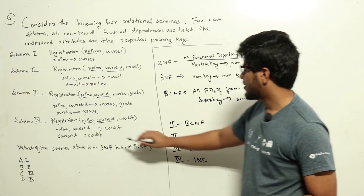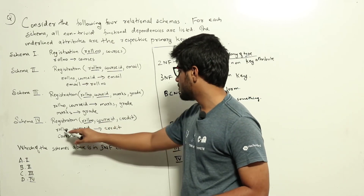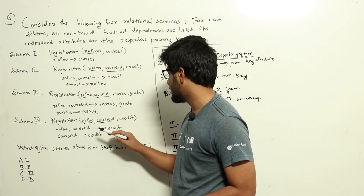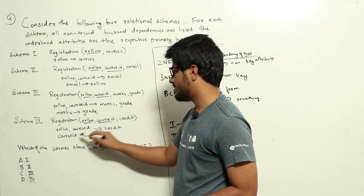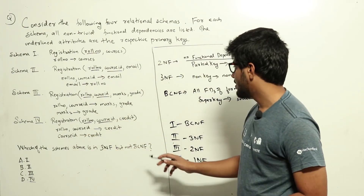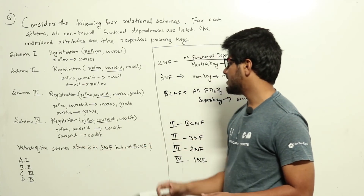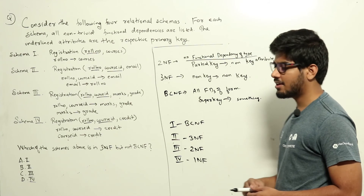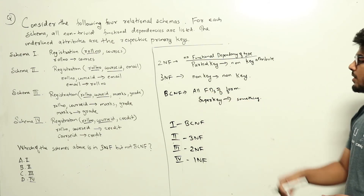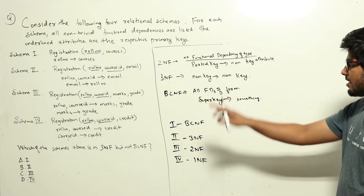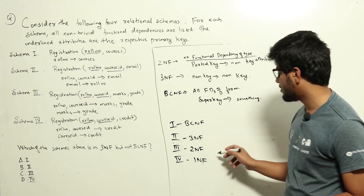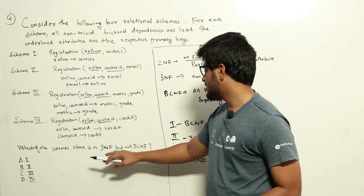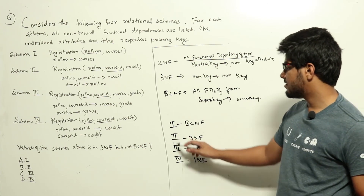Schema 4: roll number, course_id to credit — this is super key to something, satisfying BCNF. Course_id to credit: course_id is a key attribute, so this is partial key to a non-key attribute, which violates 2NF. Schema 4 is in 1NF but not 2NF. So the question was which schema is in 3NF but not BCNF — the answer is schema 2.